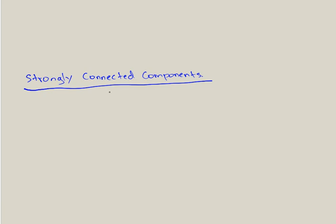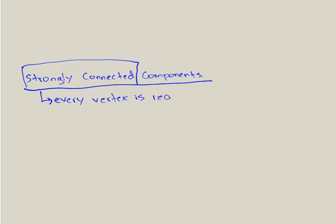I want to talk about strongly connected components. Say you were given a directed graph and asked to find strongly connected components — how do you do that? First of all, what does strongly connected mean? Strongly connected means that every vertex is reachable from every other vertex.